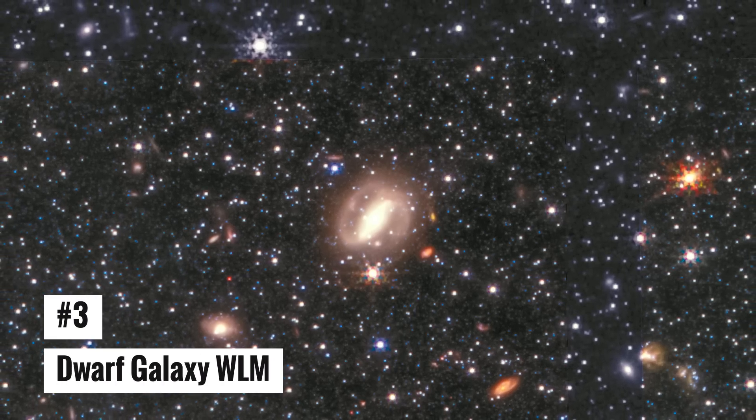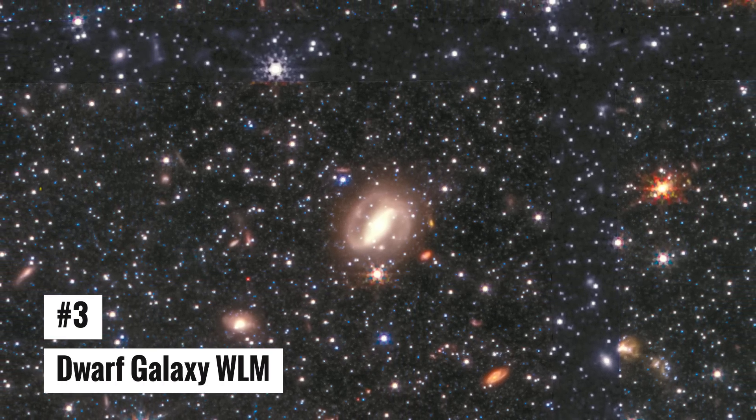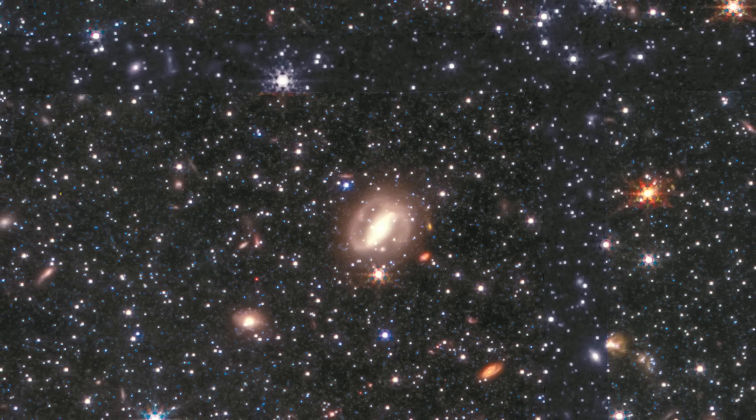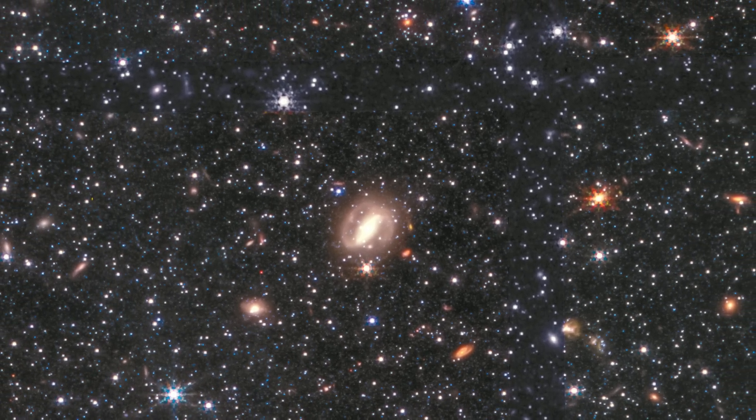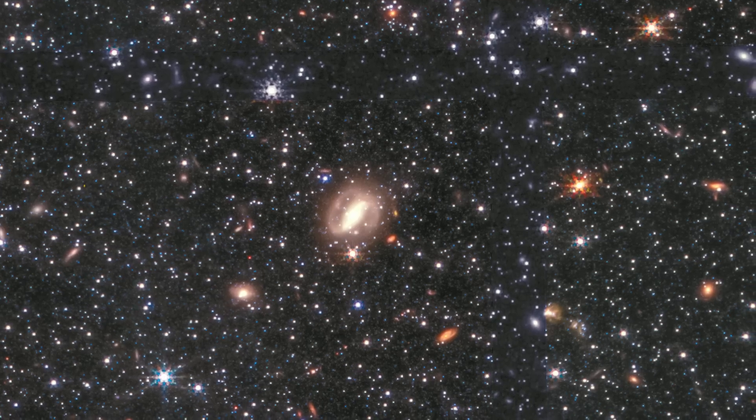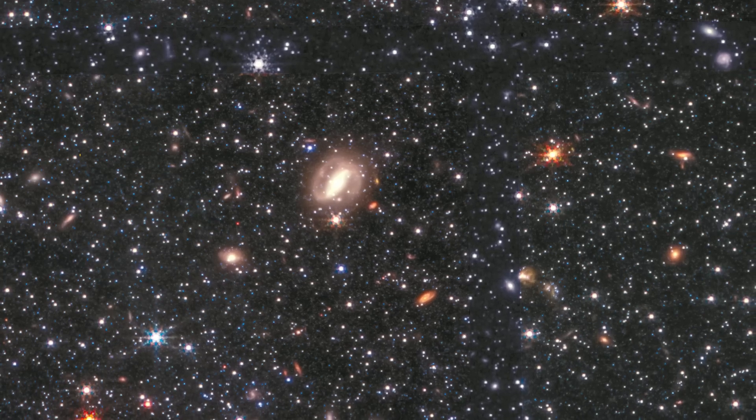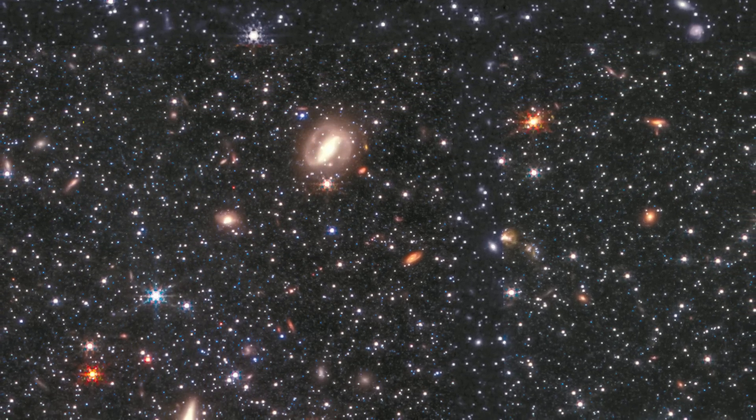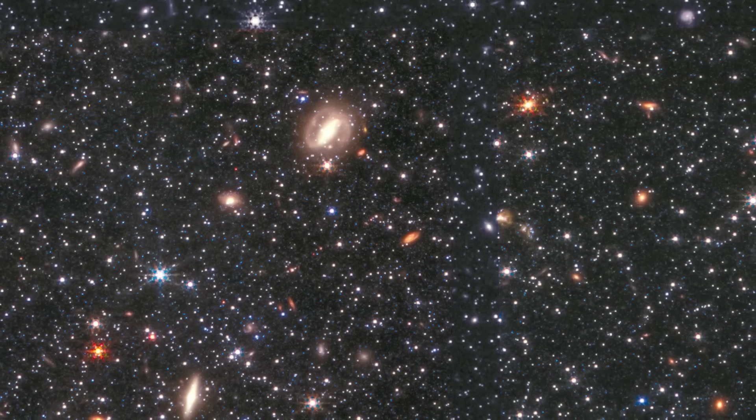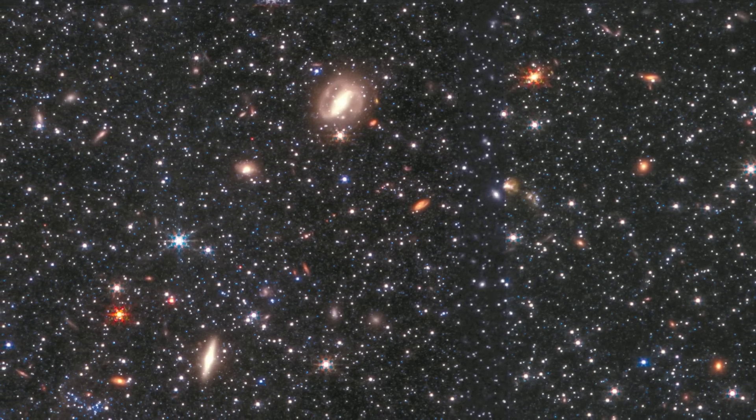Number 3: Dwarf Galaxy WLM. Dwarf Galaxy WLM is nearby. It's 3 million light-years from Earth and lonely, but close to the Milky Way. WLM may not have interacted with other systems, making it ideal for testing galaxy formation and evolution ideas. The Milky Way entangles many surrounding galaxies, making them difficult to examine. WLM's gas resembles early universe galaxies, which is interesting and crucial.